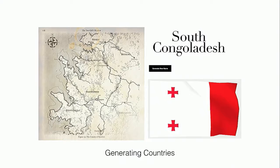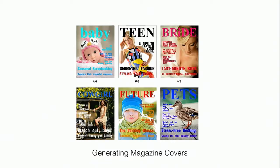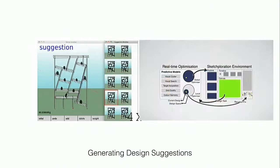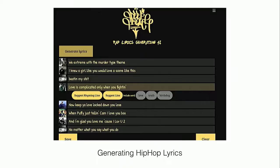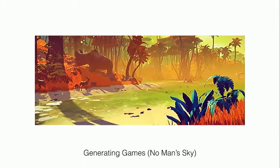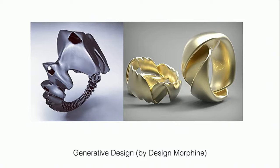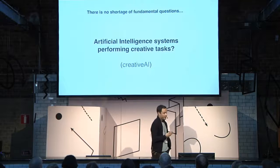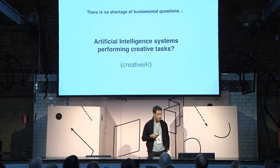My Twitter feed lately has turned into just an onslaught of interesting creative projects. As examples: hobbies generating entire world maps with fake country names and fake flags; folks generating magazine covers; randomly generating faces; generating design suggestions; generating hip-hop lyrics; generating entire worlds with about seven billion planets; generating jewellery, bicycles, and even architecture room-scale stuff by Michael Hansma. Literally every day, five or six of these experiments pop out.